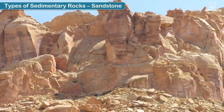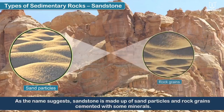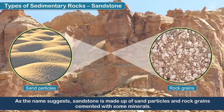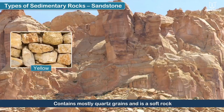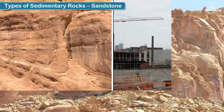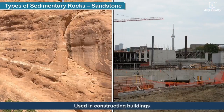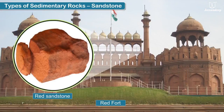Sandstone is made up of sand particles and raw grains cemented with some minerals. It contains mostly quartz grains and is a soft rock, mostly yellow, brown, pink, or red in color. Sandstone is used in constructing buildings. The Red Fort in Delhi is made of red sandstone.